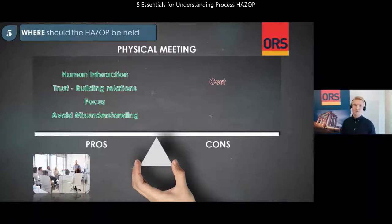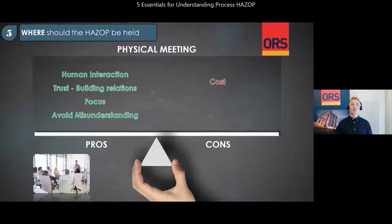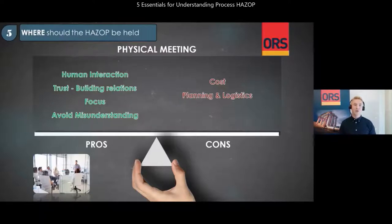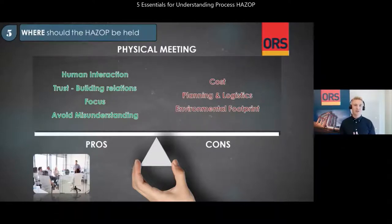Cons for a physical meeting. Cost: it can be costly to ensure all necessary participants are present in the meeting, including travel costs, accommodation if the workshop lasts for more than one day, and refreshments and food during the workshop. The cost is dependent on the number of participants and their location compared to the meeting location. The second con is planning and logistics: ensuring that all participants are present in the same location can be difficult, as participants may have other commitments. Traveling is time consuming and might not always go as planned, causing delay of key participants. Environmental footprint: some environmental pollution might be expected related to traveling, though this depends on the choice of travel — for example, CO2-neutral traveling compared to fossil fuels.